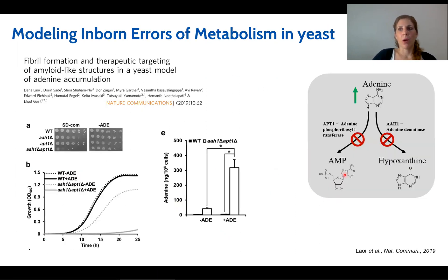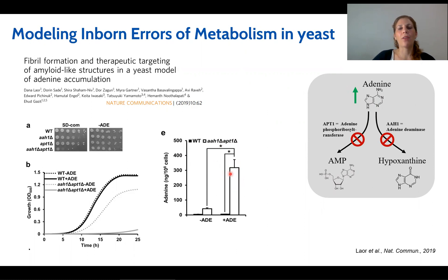Here you can see our paper published two years ago about an in vivo yeast model for adenine accumulation. When we manipulated two genes important in the salvage pathway of adenine, it led to adenine accumulation. We were able to show, using mass spectrometry, that on SD complete media, the double mutant showed high intracellular levels of adenine — only the double mutant, and only in SD complete media.